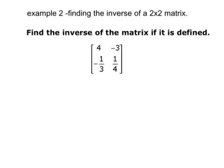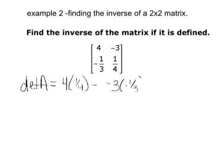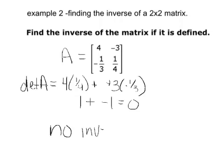Let's try another one. Find the inverse. First find the determinant of A: 4 times one-fourth minus negative 3 times negative one-third. This gives 1 plus negative 1, which is 0. Since the determinant is 0, this matrix has no inverse — it's a singular matrix.